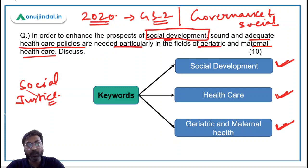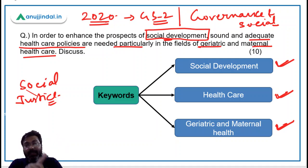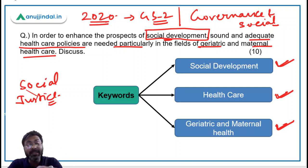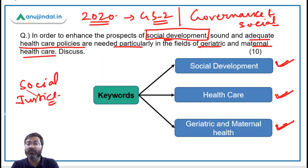Now, how do we approach this question? First we write our introduction, then the body, and finally the conclusion. In the introduction we will start with social development, because that is the main keyword around which the entire answer revolves. The second most important keyword is healthcare. So the answer will revolve around both social development and healthcare.